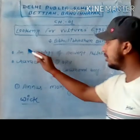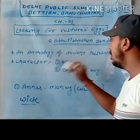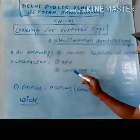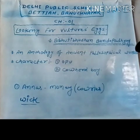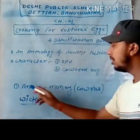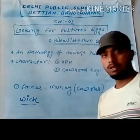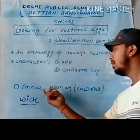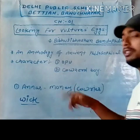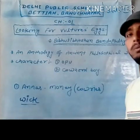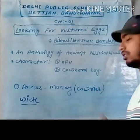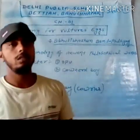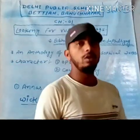I have written here the characters. The first character is Opu and the second is the cowherd boy. Also, there is an important word — 'anas' — which appears in the middle of the story. Anas means money; in village language you can say 'kauri.' So let's start the story.